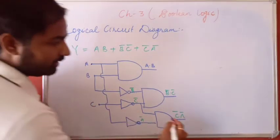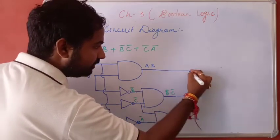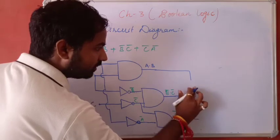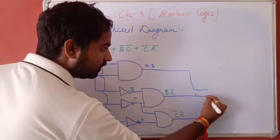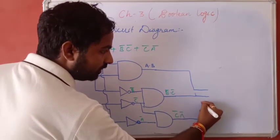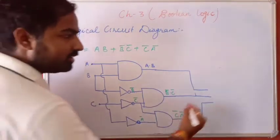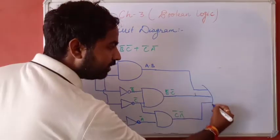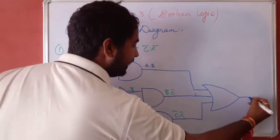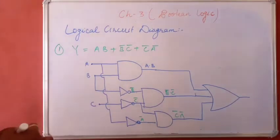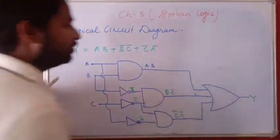And after that, in all the operations plus is there, which means OR operation is there. So we have to implement an OR gate for all the signals. And this is your final output.